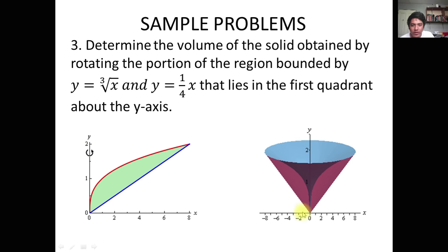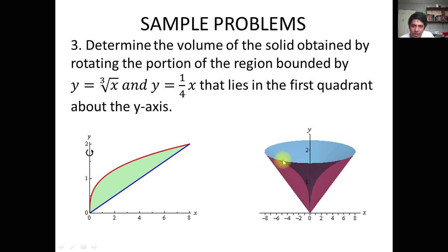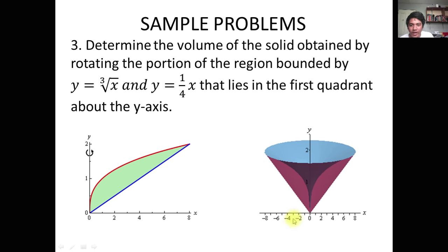After rotation about the Y-axis, we form a cone-like 3D figure — not literally a cone, but a shape with an inner radius and an outer radius. The inner radius is produced by one equation and the outer radius by the other equation. Since this bounded area does not touch the X and Y axes directly — it has an inner and outer radius — we use the washer method.